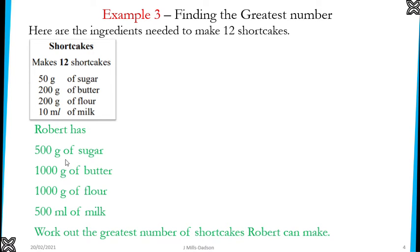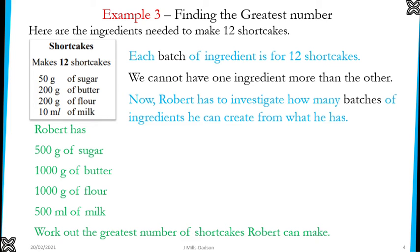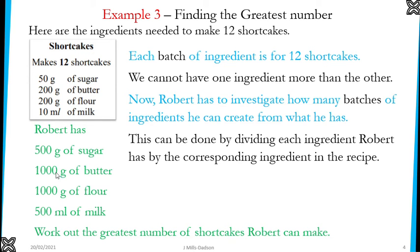The question asks you to investigate how many batches you can take until one ingredient is completely finished. Remember, in creating a recipe, once one ingredient is finished you cannot carry on because you cannot make the dish when one of the ingredients is not there. Each batch of ingredients is for 12 shortcakes, and you cannot have one ingredient in a greater proportion than the others. To investigate, all you need to do is divide each of the ingredients that Robert has by the recipe amount.